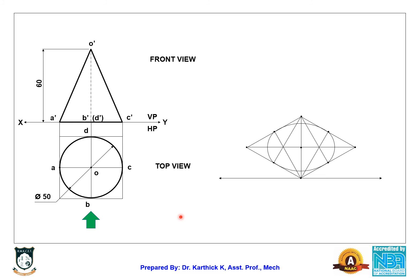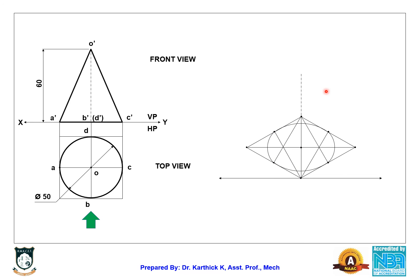We know the axis length is 60 mm and the center is already marked. Bring your scale and draw a 60 mm axis line. The next step is to draw the extreme generators.